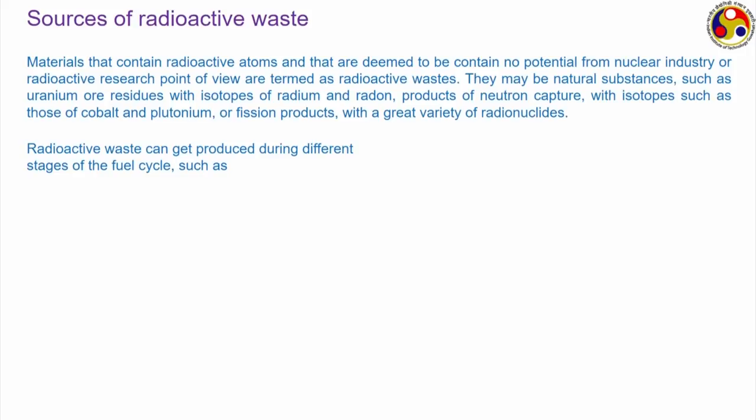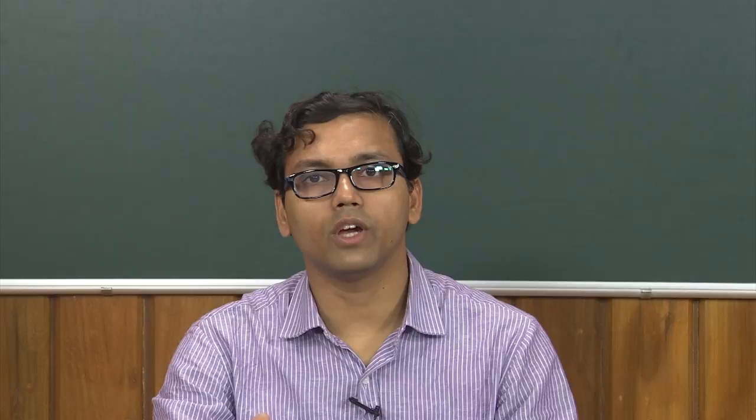Radioactive waste can come from different stages of the fuel cycle and from a few other sources. Mining of uranium is probably the biggest source of radioactive waste. Just as with coal, we do not get uranium directly from the mine — uranium comes coupled with rocks and other materials, requiring chemical or mechanical treatment to separate it. Lots of unwanted material that comes out during mining constitutes a large fraction of the radioactive waste.